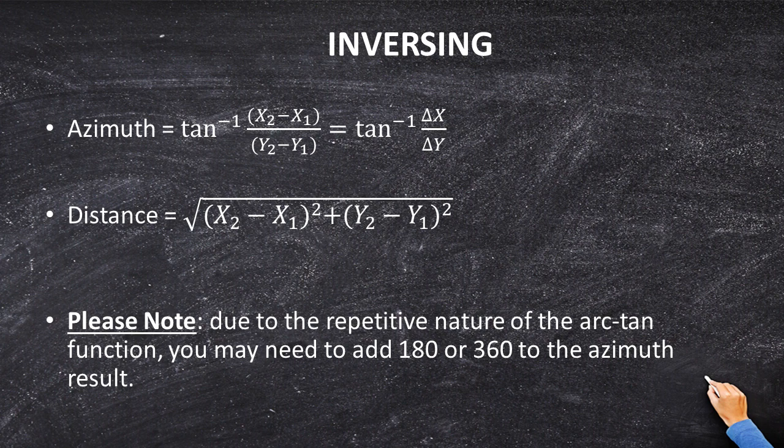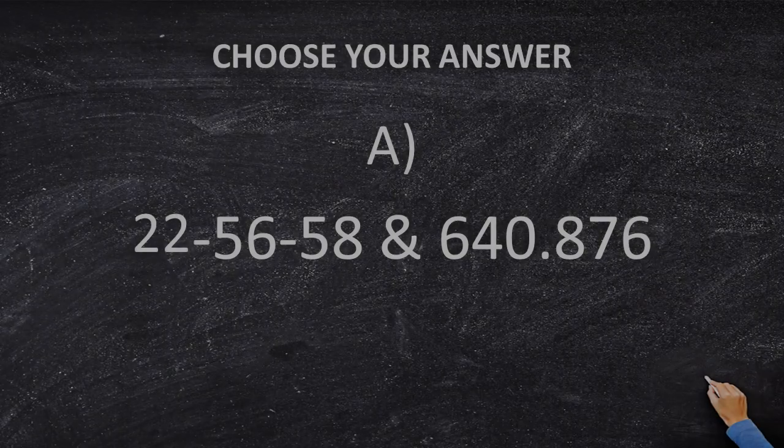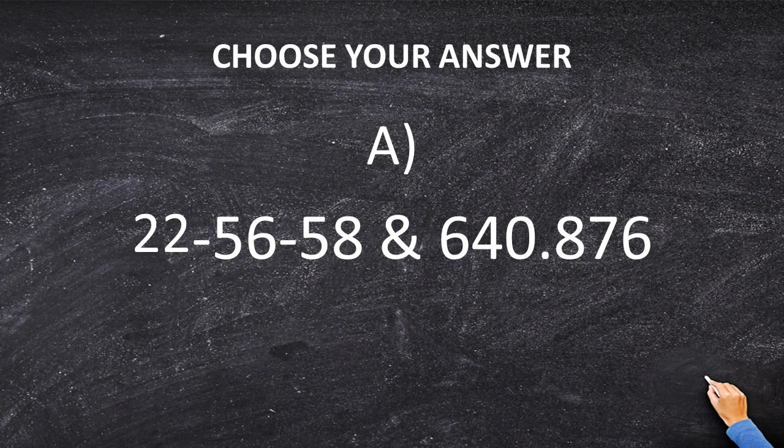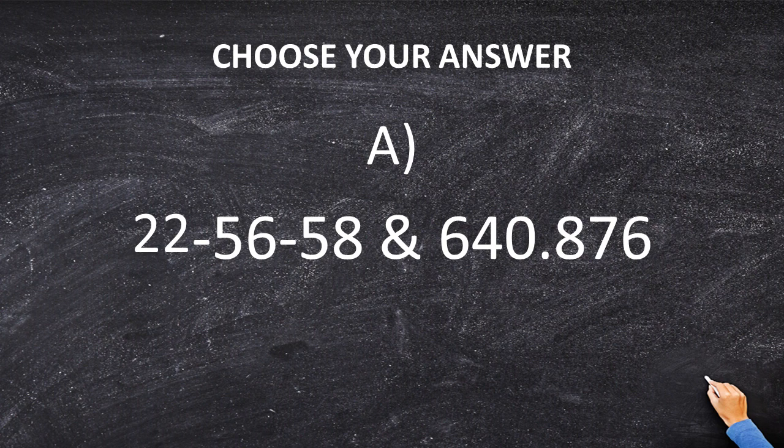But I'm going to warn you that using the arctangent function is dangerous. You may have to add 180 or 360 to your result. And if you'd like to know why, please read that coordinates handout. Plugging in my values of delta x and delta y, my answer is 22-56-58 and 640.876.